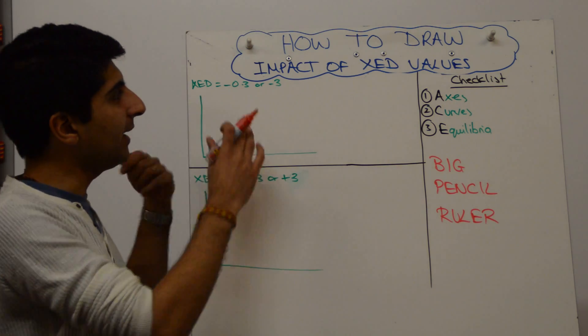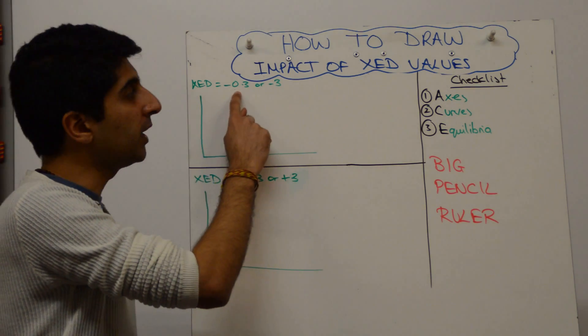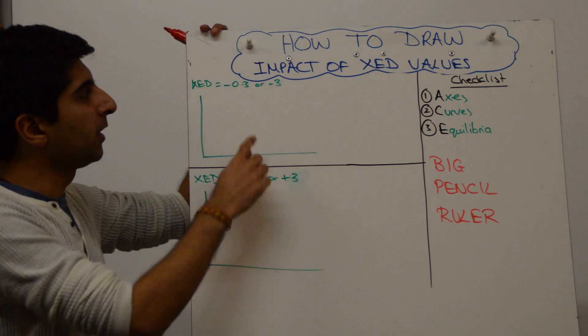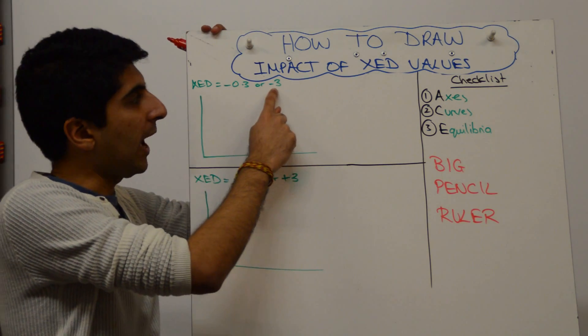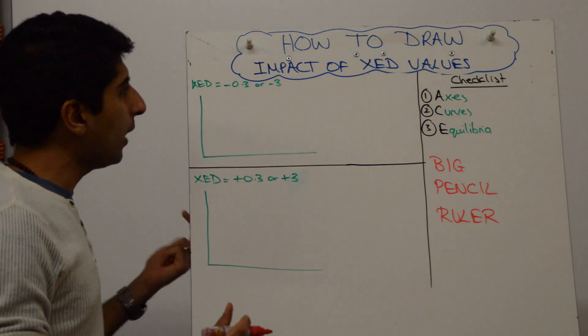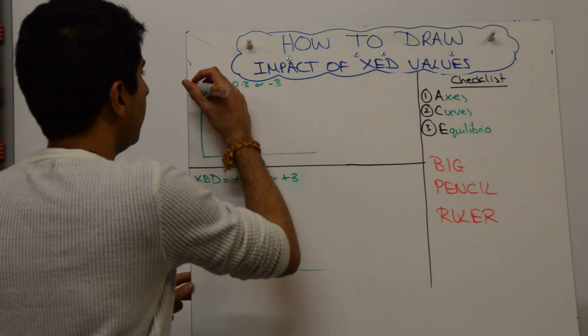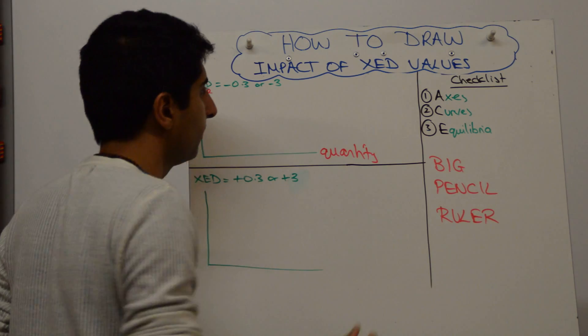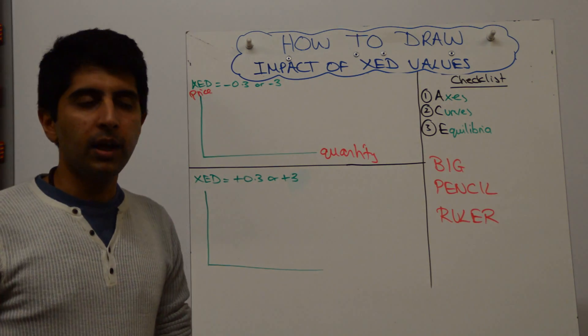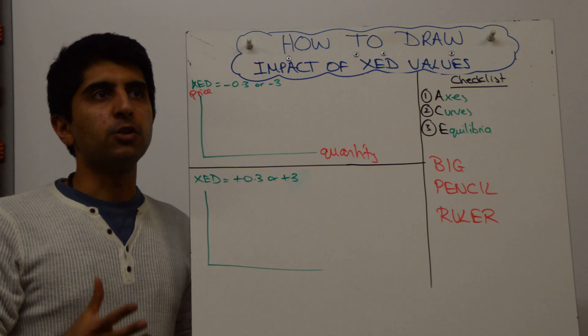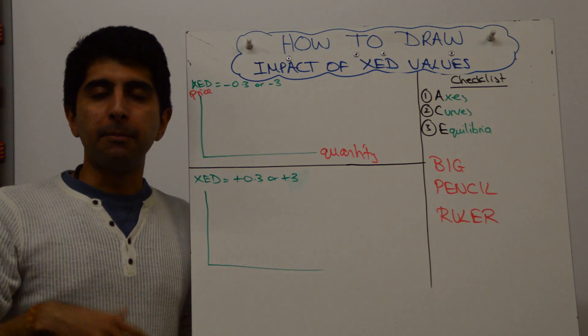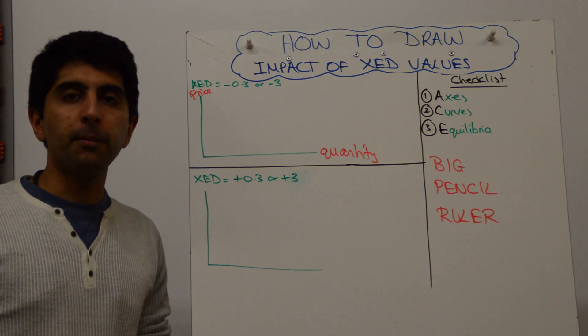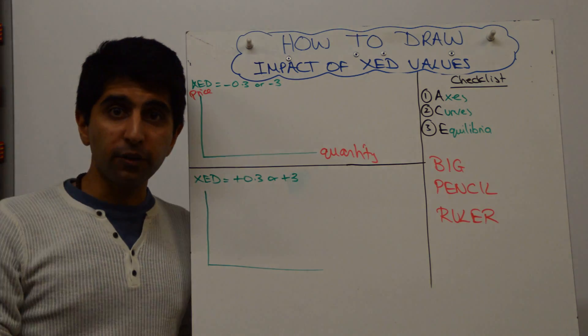So let's start by looking at XED values of maybe minus 0.3 or minus 3. What we have here are complements, minus tells us that, the negative tells us that. Weakly related, minus 0.3, and strongly related, greater than 1, minus 3 here. So how do we show the impact of these values on the diagram? Well let's start. I'm not going to apply this because what I'm going to show is how to draw the diagram. So maybe it's a really simple relationship between, let's take Nespresso machines and Nespresso capsules. So let's say that the price of Nespresso machines has gone up by 10%.